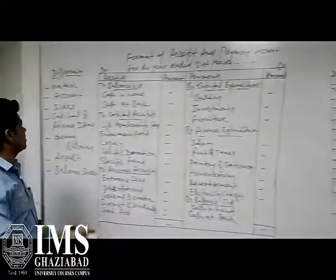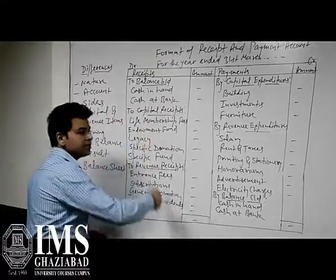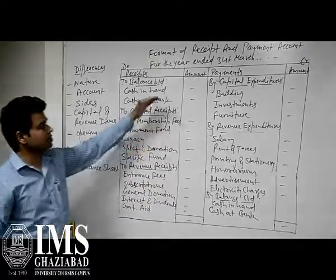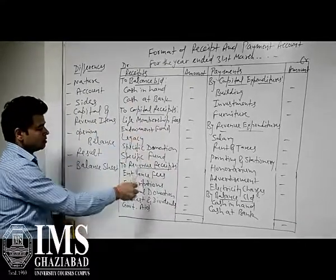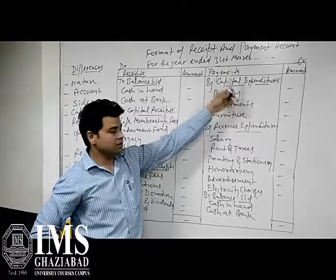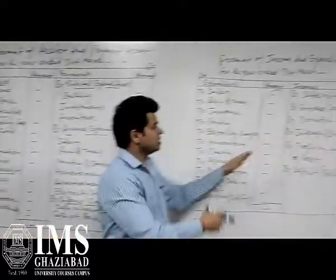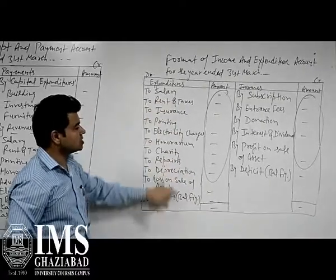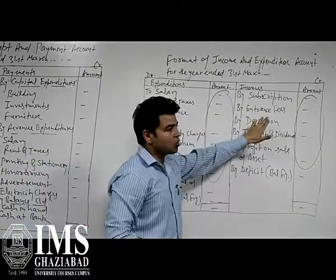The next point of difference is the capital and revenue nature of items. In the Receipts and Payment Account, both capital and revenue items are shown — you can see capital receipts, revenue receipts, capital expenditures, and revenue expenditures. But in the Income and Expenditure Account, only revenue nature items are shown — the left side represents all revenue expenditures and the right side represents all revenue income.